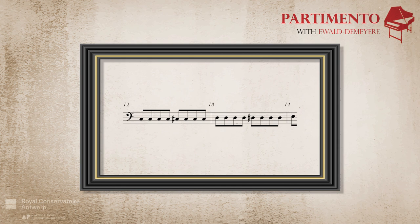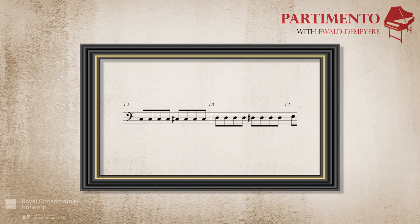From bar 12 on, Fenaroli introduces the moto del basso that ascends chromatically — a common schema today also known as a monte. Still, the partimento pupil is faced here with an interesting challenge. Whereas the bass of the moto starting this partimento changes every beat, the bass of this monte changes only every half a bar. In order to make this passage work musically, the right hand should compensate for the possibly somewhat static harmonic rhythm.